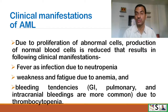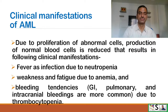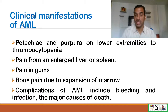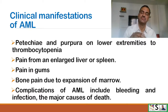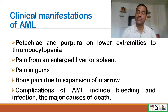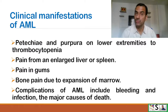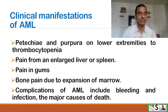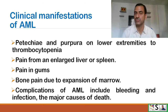Bleeding tendencies are common due to thrombocytopenia — fewer platelets in the blood. Bleeding mostly occurs in the gastrointestinal tract, pulmonary system, and intracranially. Patches and petechiae on lower extremities occur due to thrombocytopenia, as subcutaneous blood escapes and deposits below the skin. Pain from enlarged liver and spleen, gum pain, and bone pain due to expansion of bone marrow also occur. Complications of AML include bleeding and infection, which are the major causes of death.